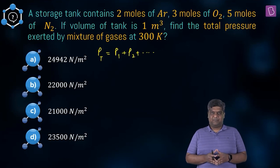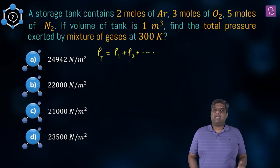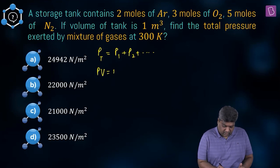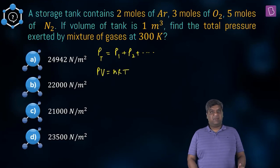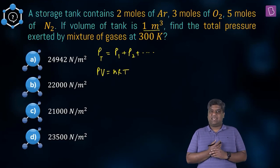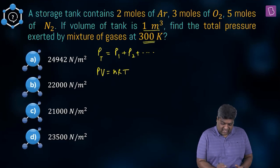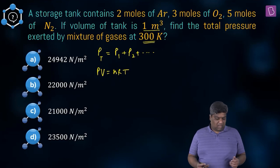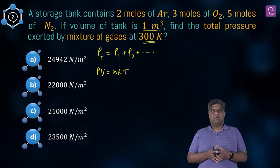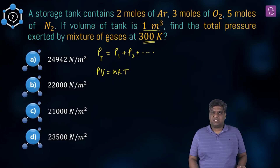To calculate the pressure exerted by individual gases, we use the ideal gas equation: PV = nRT. The volume V for all the gases is the volume of the container, given as one meter cube, and the temperature T is 300 kelvin. So we apply Dalton's law and use the ideal gas equation to find the partial pressures.